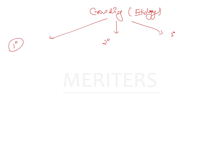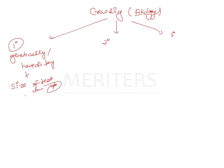Primary crowding is seen in those situations which are genetically determined or where there is some hereditary factor. This means that there is some discrepancy in the size of the teeth and the jaws — they are not proportional — which causes a tooth size arch length deficiency leading to crowding.